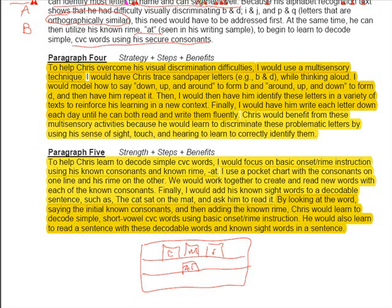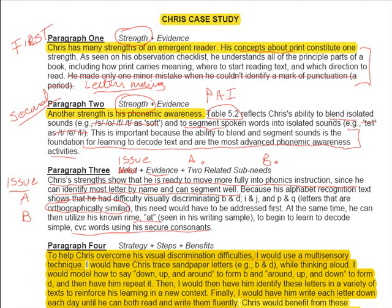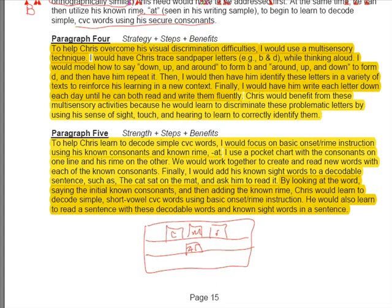The benefit of the making words activity states: by looking at the words, saying the initial known consonants, and then adding the known rhyme, Chris would learn to decode simple short-vowel CVC words using basic onset-rhyme instruction. He would also learn to read a sentence with these decodable words and known sight words. To sum up, you can see clearly how it is a very tight five-paragraph essay: strength one, strength two, the major issue A and B, followed by the lesson in paragraph four and the lesson in paragraph five, along with the benefits to support it. You may wish to copy this answer — pause and do that now.